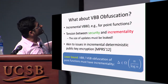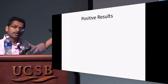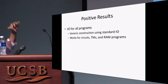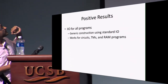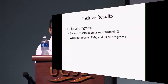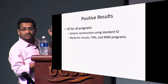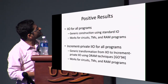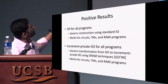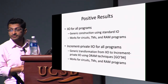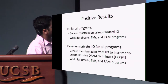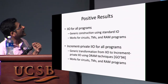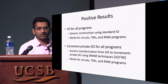Coming back to positive results: for the basic notion of IIO, given IO and a bunch of other primitives like one-way functions, we can construct basic IIO for all programs — whether as circuits, Turing machines, or RAM programs. We can also upgrade the security: once you have basic IIO, you can upgrade to increment-private IIO using oblivious RAM techniques of Goldreich and Ostrowski. This result also works for circuits, Turing machines, and RAM programs.